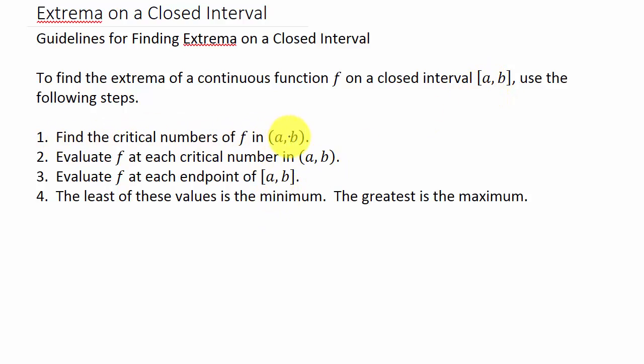First we find the critical numbers of f that are in (a, b). Then we evaluate each critical number in (a, b). So if the critical numbers are in the interval, then we evaluate it, and then we evaluate the function at each endpoint. The least of these values is the minimum; the greatest is the maximum.